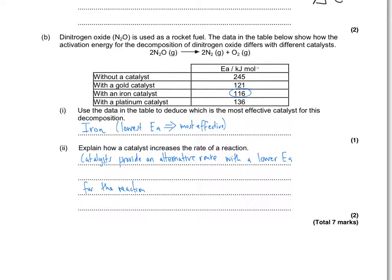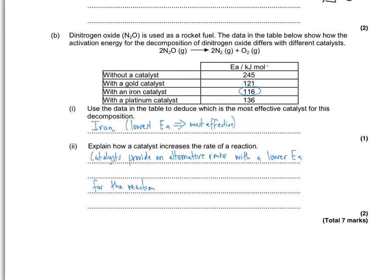The next bit is about the choice of catalyst, and use the data on the table to choose which is the most effective catalyst for the decomposition. Well, this is the lowest activation energy for the iron. So as it's the lowest activation energy, it means that it's going to be the most effective catalyst. Without catalyst, it's very high. You see, 245. Platinum is least effective for the catalyst, then gold, and then iron is the most effective. And then finally, explain how a catalyst increases the rate of reaction. Catalysts provide an alternative route with a low activation energy for the reaction. The first mark is for saying they provide an alternative route. The second mark is that they provide a route with a low activation energy.